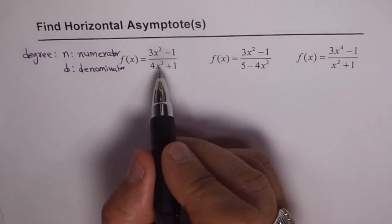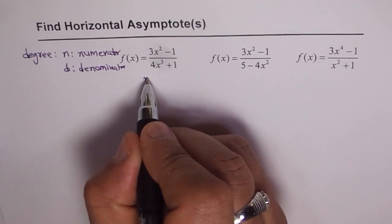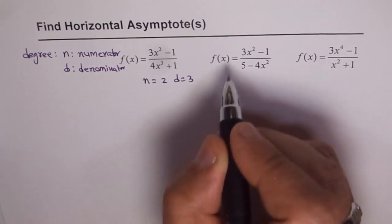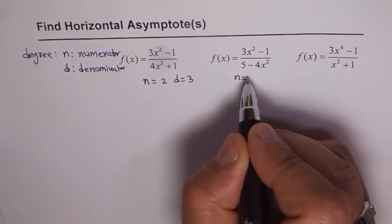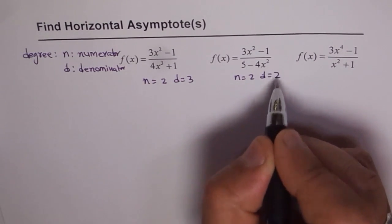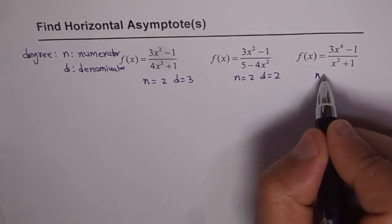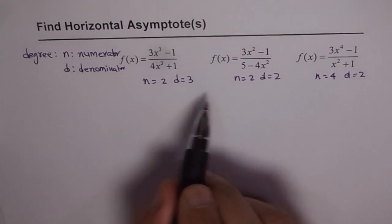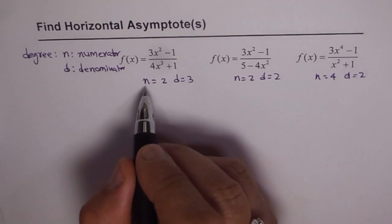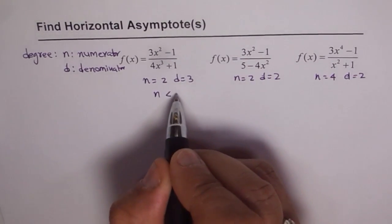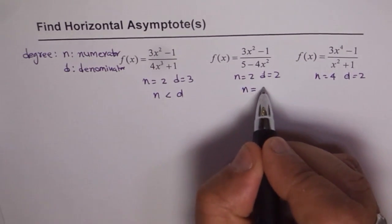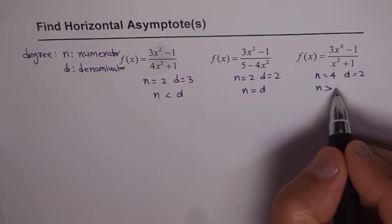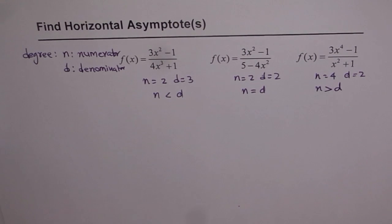So, for the first function, n is two and d is three. For the second function, the degree of the numerator is two and the denominator is also two. For the third function, the numerator degree is four and the denominator degree is two. So in the first case n is less than d, in the second case n equals d, and in the third case the numerator degree is higher than the denominator degree.